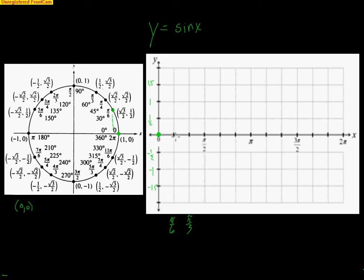At pi over 6, which is the first tick mark, we are at 1/2. At pi over 4 — directly between pi over 6 and pi over 3 — the y-coordinate is radical 2 over 2, which is approximately 0.7. At pi over 3, the y-coordinate from the unit circle is radical 3 over 2, approximately 0.87, so really close to 1 but not exactly 1.